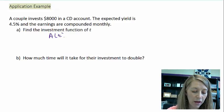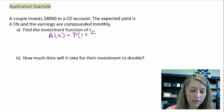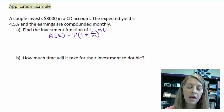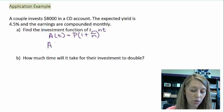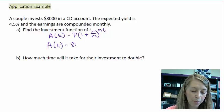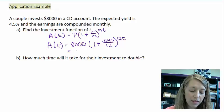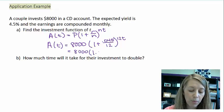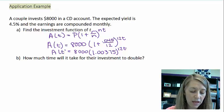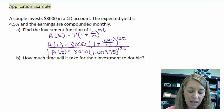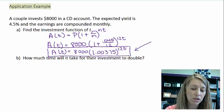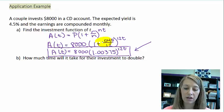The formula is A(t) = P(1 + r/n)^(nt), where t represents time. In this example, we had $8,000 initially invested, 1 plus our rate of 0.045 divided by 12 because it's compounded monthly to the 12t. If we simplify the inside, that's 1.00375 to the 12t. That was the formula we came up with. I don't think I simplified it in the first video, so now here is the simplified version.